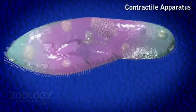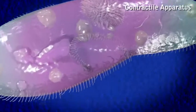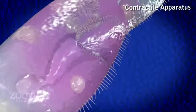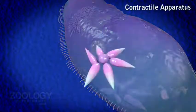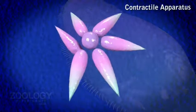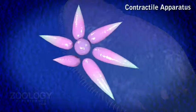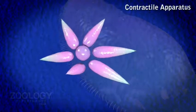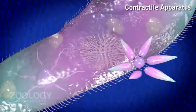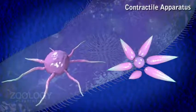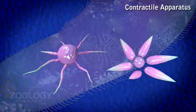Contractile Apparatus: In Paramecium, there are two contractile vacuoles occupying somewhat fixed positions in the endoplasm. One vacuole lies near each end of the body, close to the dorsal surface. Each is surrounded by a circle of six to ten long, narrow, spindle-shaped radial canals.